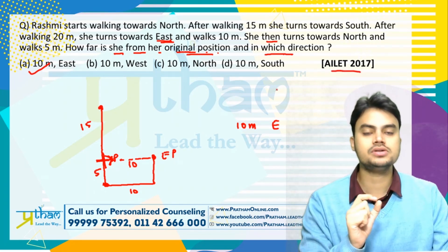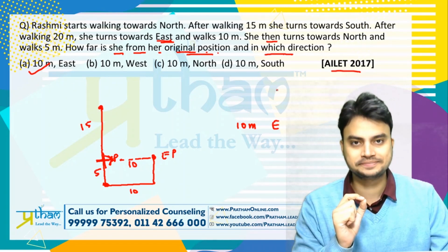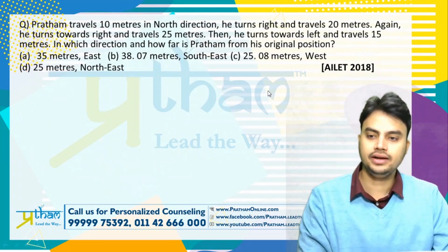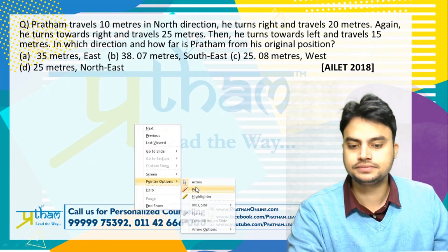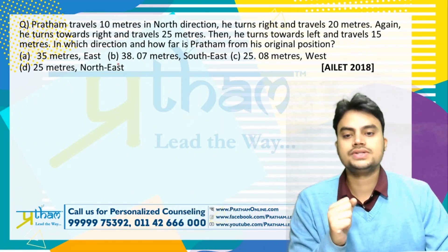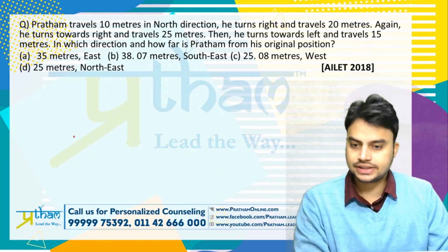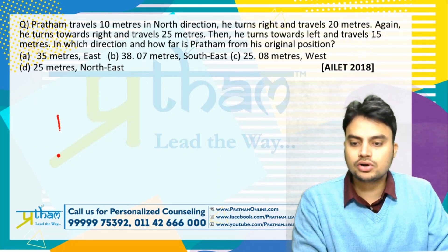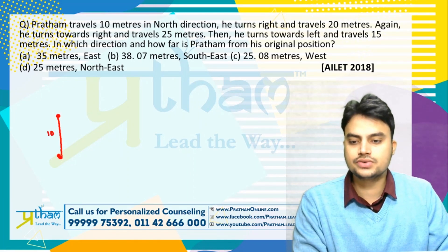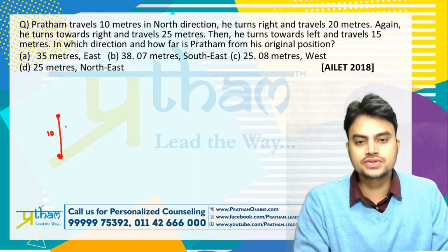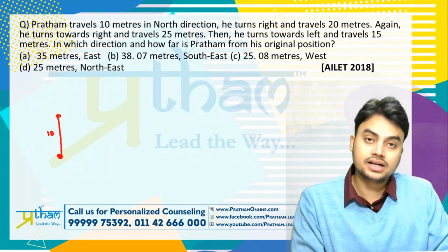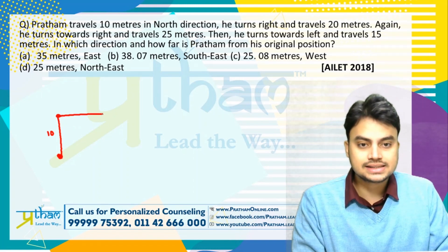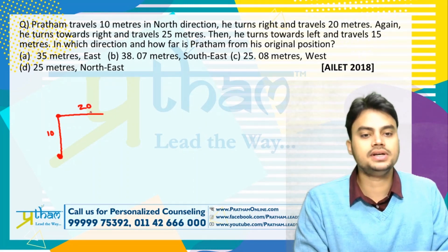So we are looking at two concepts, and two questions are being asked. Let's see the next question. Pratham travels 10 meters in the north direction — this is the starting point, 10 meters north he has travelled. He turns right and travels 20 meters. Right or left — don't make that mistake. So right is in this direction, right will be 20 meters.